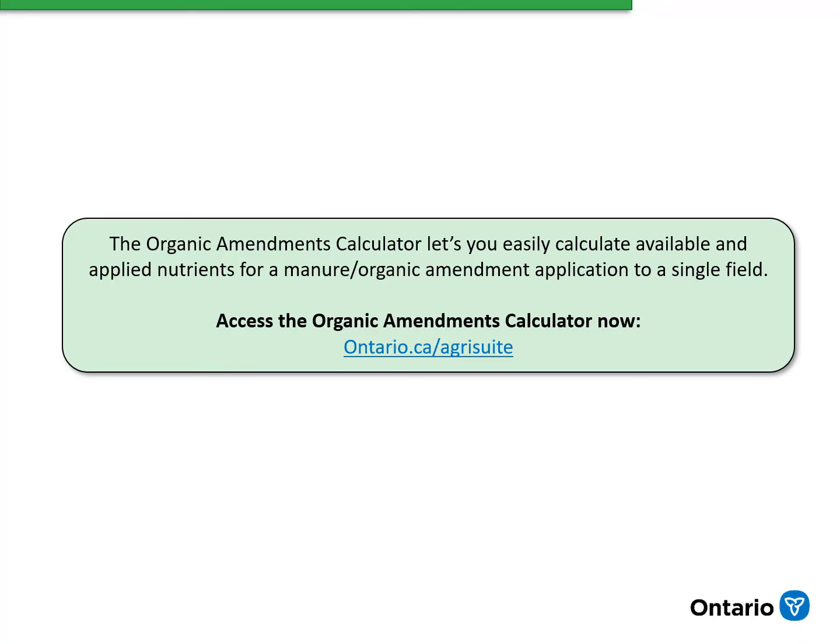To access the Organic Amendments Calculator, go to ontario.ca/agrisuite on a phone, tablet, or computer.